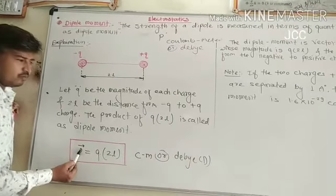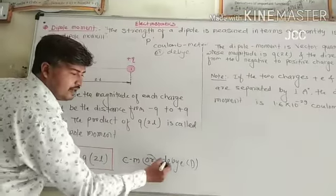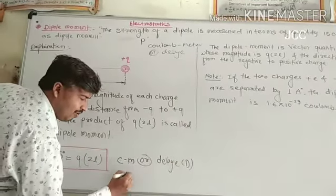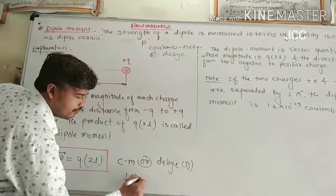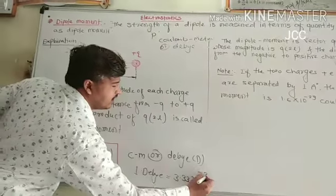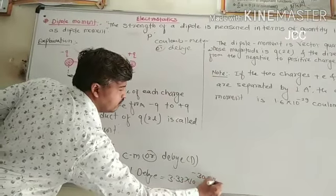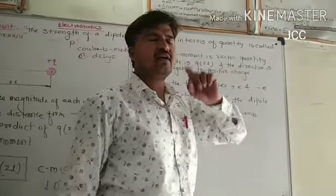This is the value of dipole moment. The unit of dipole moment is Coulomb-meter and Debye. One Debye equals 3.33 into 10 raised to minus 30 Coulomb-meter. Now the dipole moment is a vector quantity